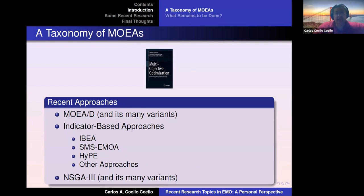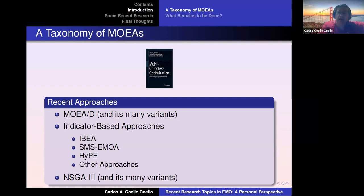In the most recent group, I'm talking about families of algorithms. MOEA/D, based on decomposition, was originally proposed in 2007 and has many variants today. Another interesting family is indicator-based, with the first indicator-based evolutionary algorithm from Zitzler in 2004; the most popular is probably SMS-EMOA, with a well-known version published in the European Journal of Operational Research in 2007. NSGA-III, from 2014, is still very popular today.